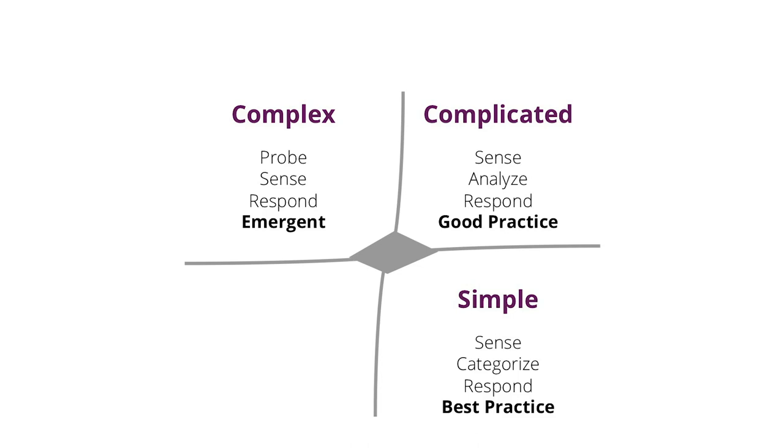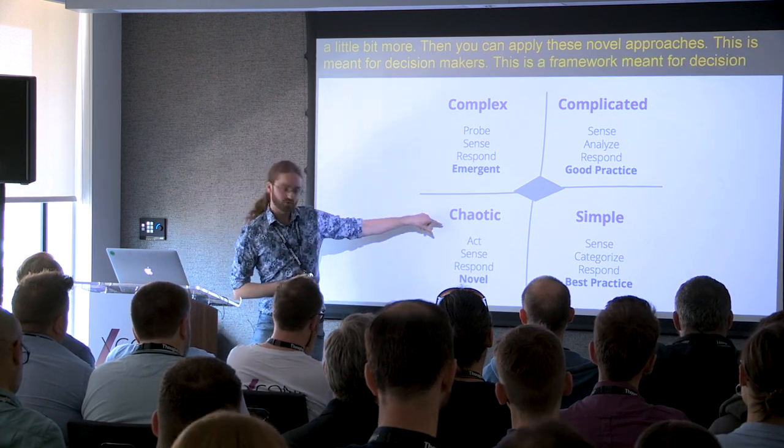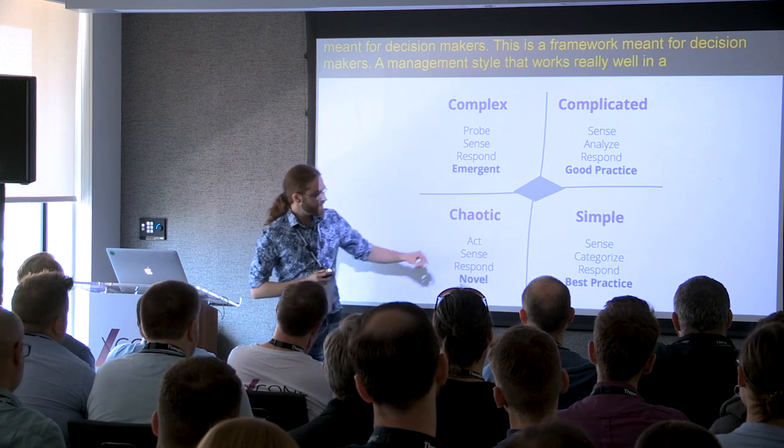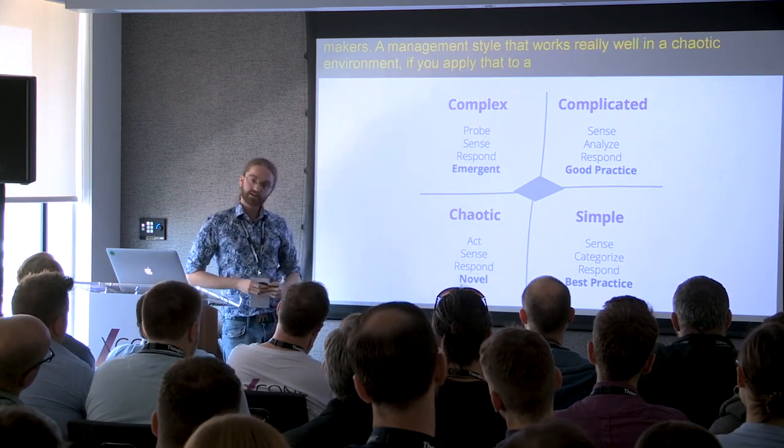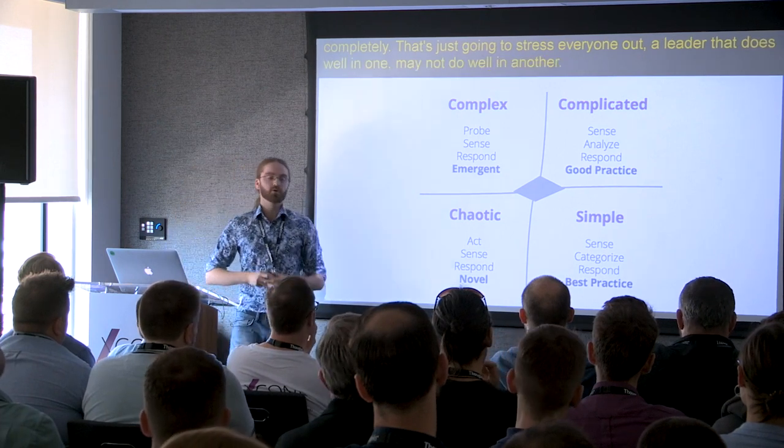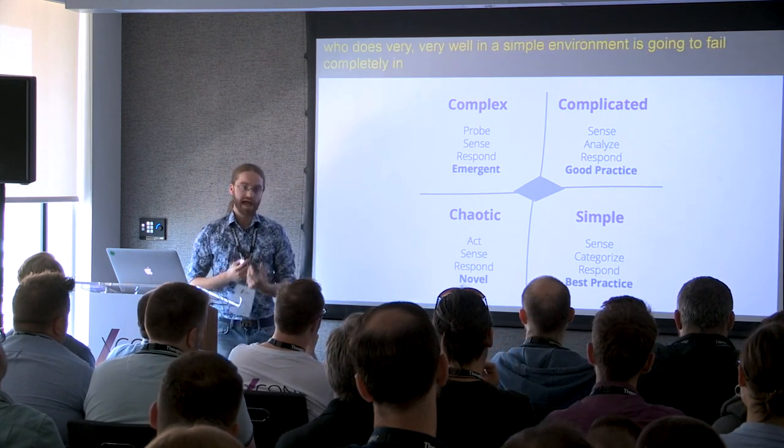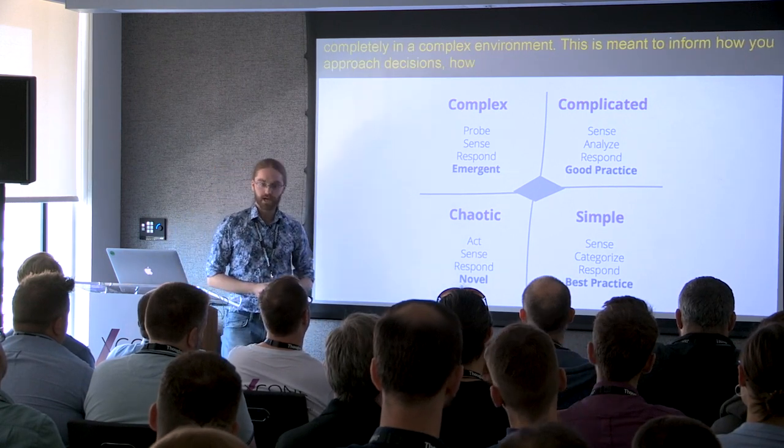Works quite well here. Some situations are chaotic—these are disasters, natural disasters, or terrorist attacks. What you do here is you really just have to act to impose order. Then you can step back, understand the system a little bit more, apply these novel approaches. This is meant for decision makers. A management style that works really well in a chaotic environment, if you apply that to a simple environment, is going to fail completely, just going to stress everyone out. A leader that does well in one may not do well in another. A top-down manager who does very well in a simple environment is going to fail completely in a complex environment. This is meant to inform how you approach decisions, how you manage a team, how you think about the world.